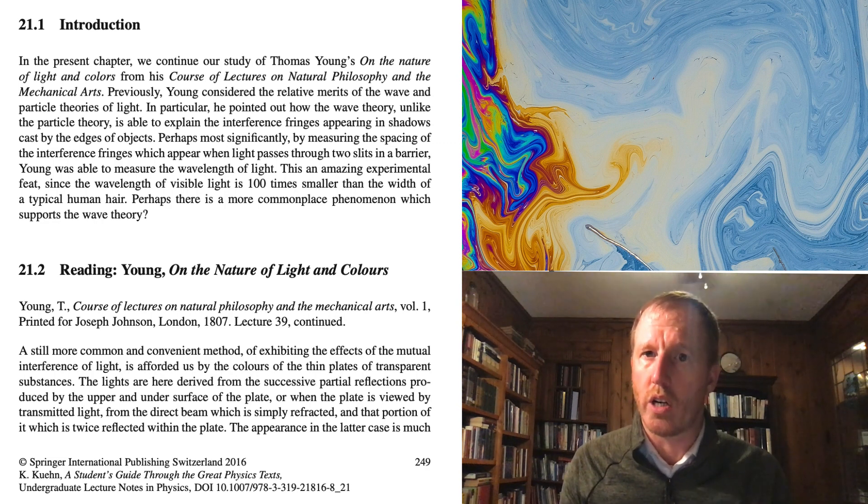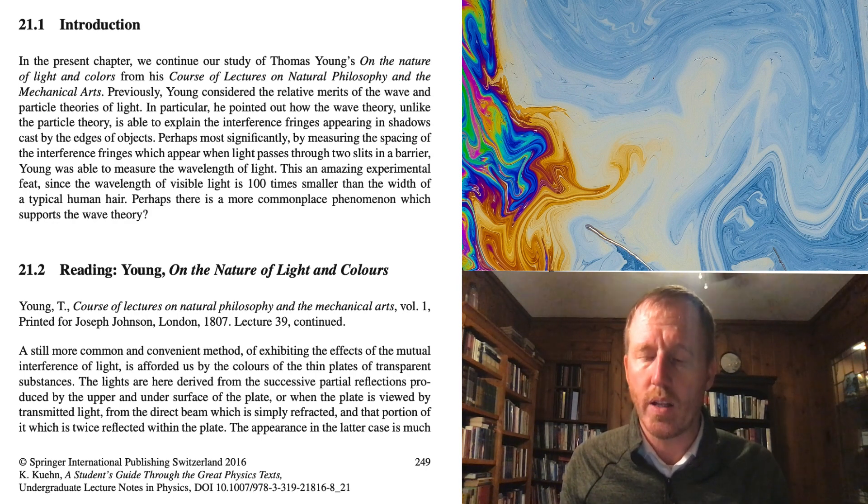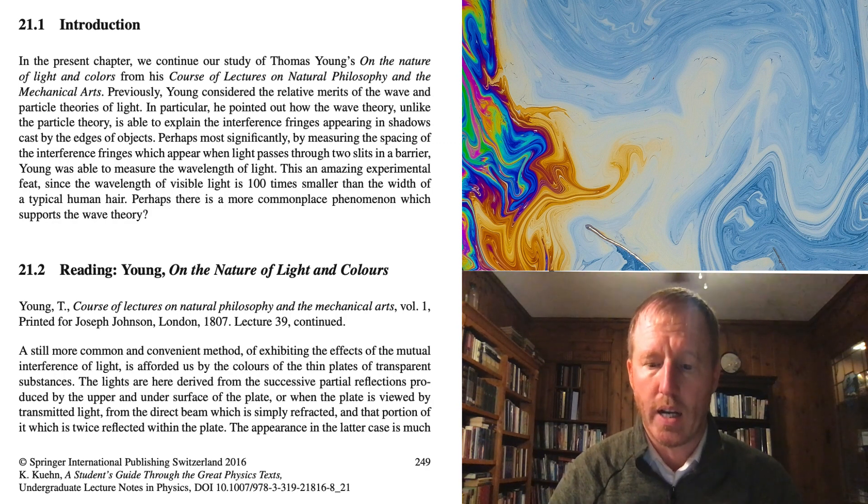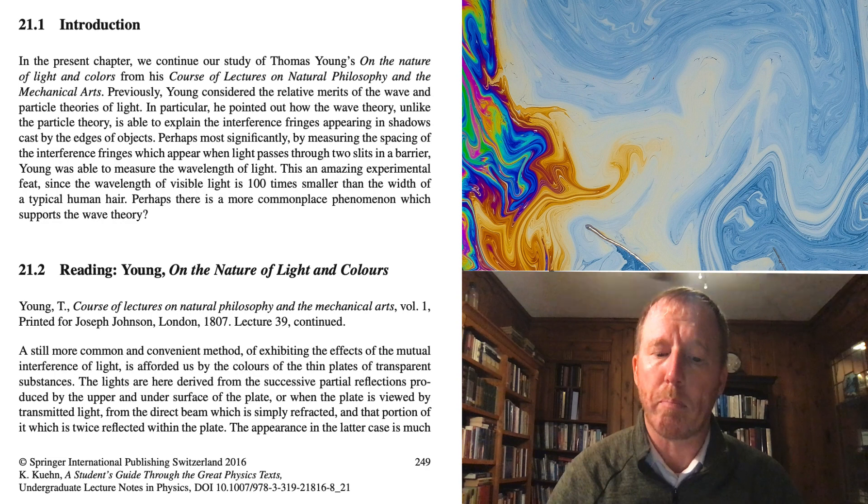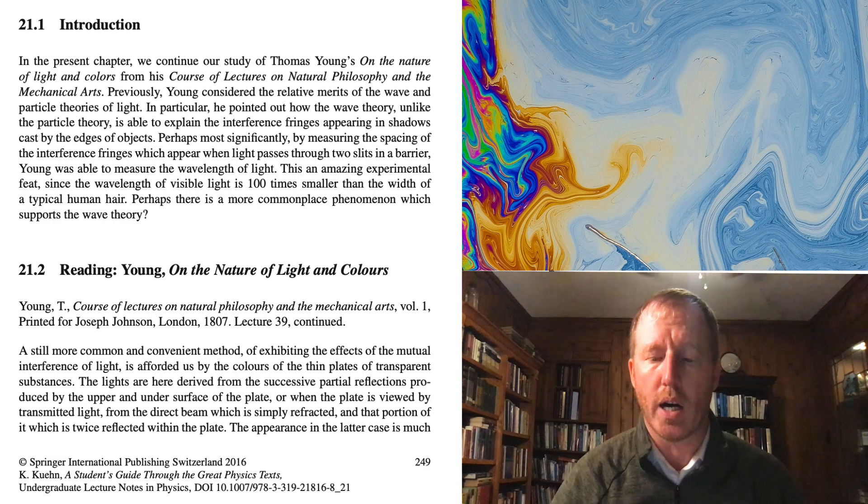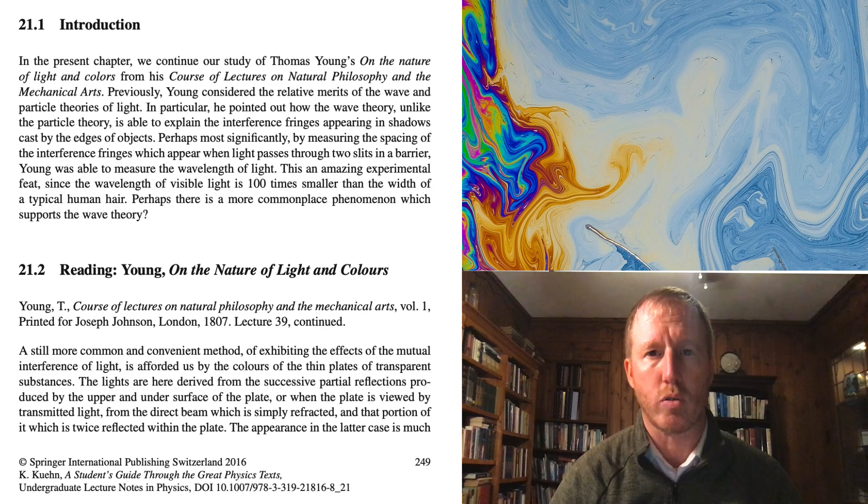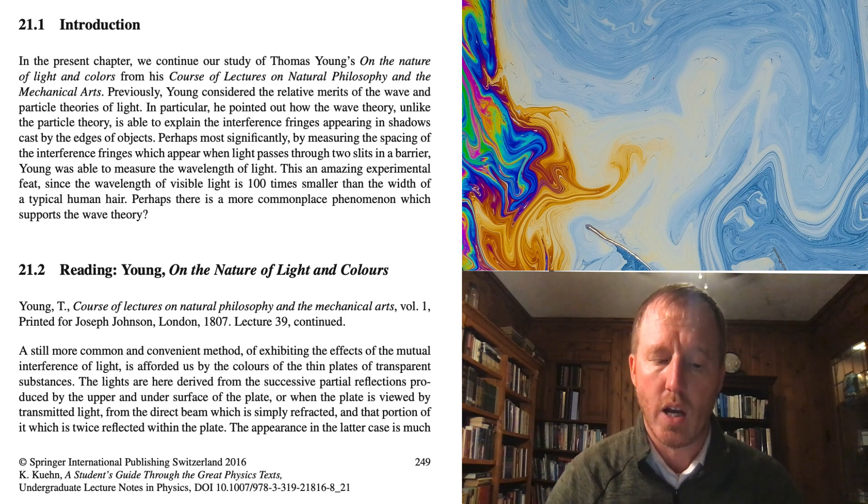This is the kind of thing that Young is talking about when he's talking about the colors of thin plates or thin films, as it's usually called nowadays. And what he's going to say is those colors can be completely understood if you take light to have a wave nature rather than a particle nature. He says specifically that the colors of thin plates are caused by successive partial reflections that are produced by the upper and lower surfaces of the plate, or by twice reflected light when passing through or transmitted through a thin plate. What I'd like to do is focus on the first example where you have successive reflections from the upper and lower surface of a plate.